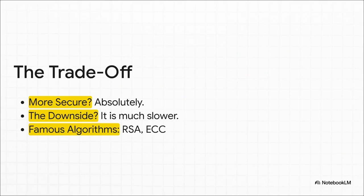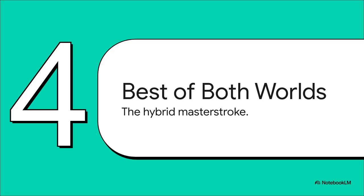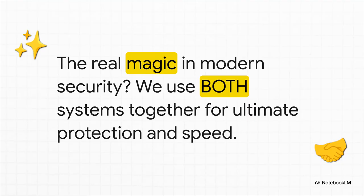Problem solved. But is it more secure? Oh, absolutely. There's always a trade-off though. This two-key system requires a lot more number crunching, a lot more computational power, which means it's significantly slower than the one-key system. This is where famous algorithms like RSA come into action. So let's recap: we have a system that's super fast but has a sharing problem, and another that's super secure but kind of slow. So what does modern technology do? It pulls off a masterstroke and gets the absolute best of both worlds. The real magic of modern security is that we don't have to choose. The solution isn't symmetric or asymmetric — it's using both of them together in a brilliant process called hybrid encryption.